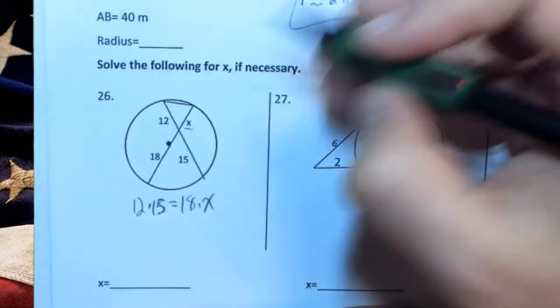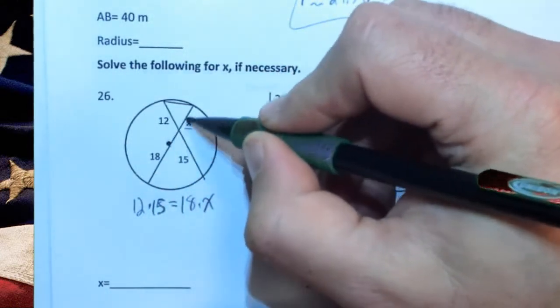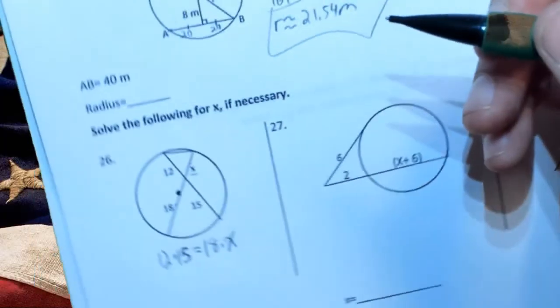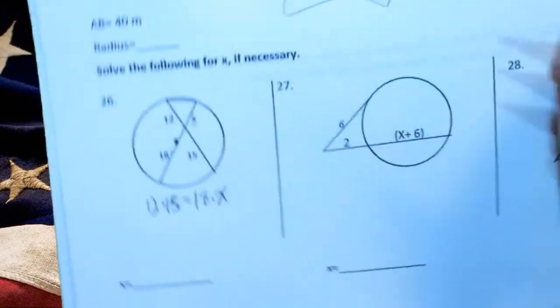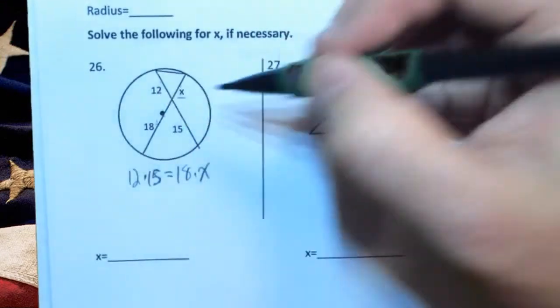In class, the kind of shortcut mnemonic we were using for that was left times right equals top times bottom. In order to do that, you have to make one of them vertical and say left times right equals top times bottom. But either way, as long as we get the two pieces of each chord...